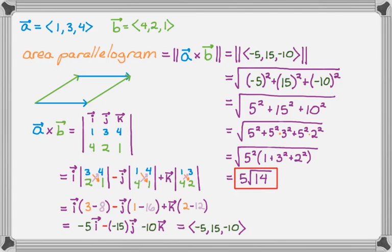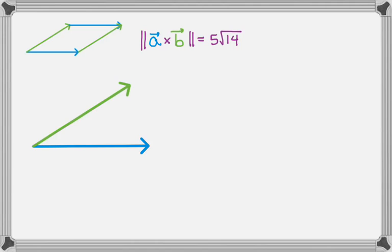And so to find the area of any triangle, let's see if we can figure out the triangle. So there's our parallelogram. We found its area as the magnitude of the cross product. So what I could do is just take those two vectors and then go across here. That creates a triangle, and that triangle would have an area that's half of the parallelogram.